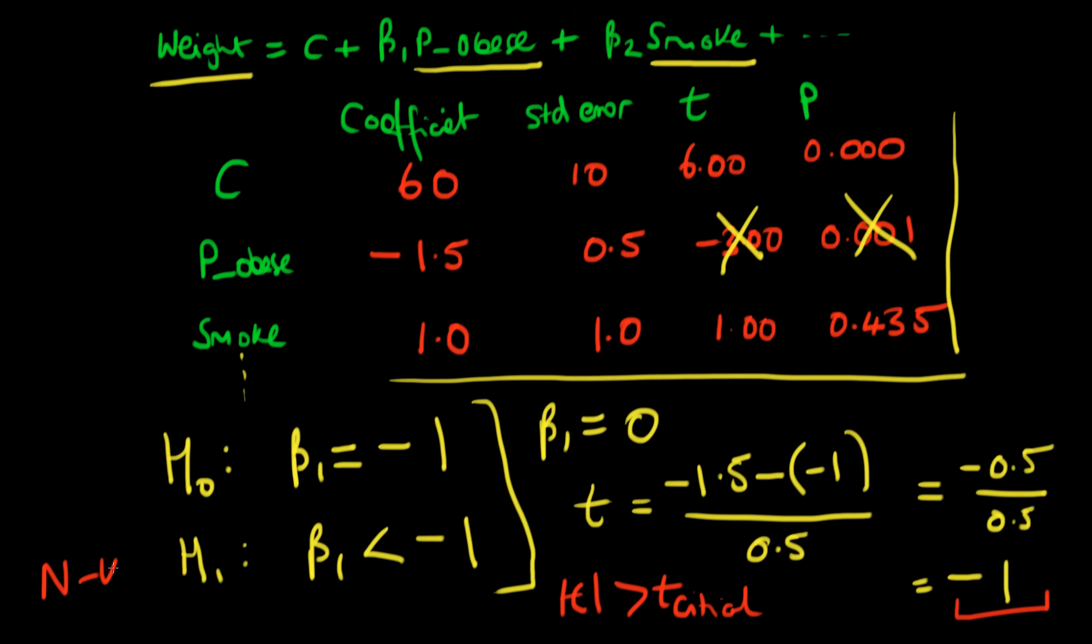So this is a one tailed test. We look up under the appropriate degrees of freedom which is always equal to n minus k where k is the number of regressors. And then we look up under 0.05 for the p value and typically this critical region is around 1.7 for a one tailed test. And because our value minus one is not greater in magnitude than 1.7, then in this circumstance we're not able to reject the null hypothesis.